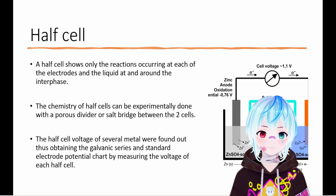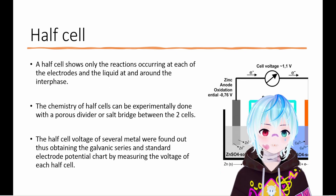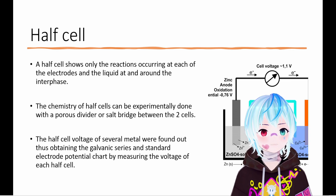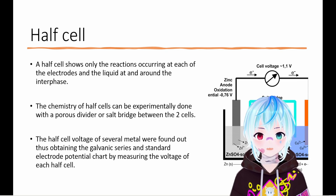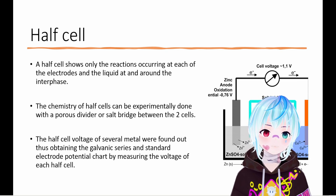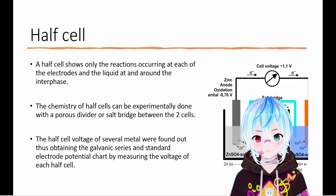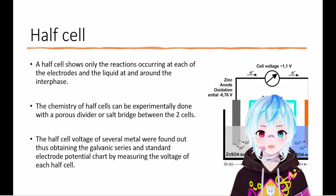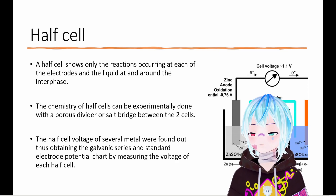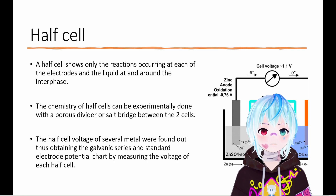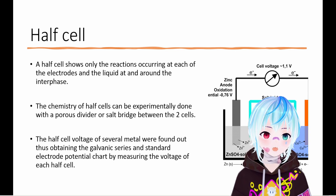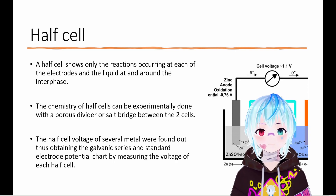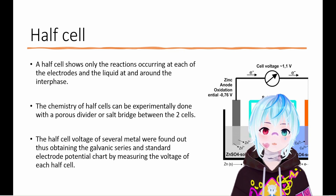A half cell is a galvanic cell which contains two electrodes and a membrane or salt bridge separating the two compartments. The solution where the anode is located is called the anolyte, and the solution where the cathode is located is called the catholyte. The salt bridge allows for a slow and steady diffusion of ions through the two containers, while a membrane allows for selective diffusion of ions — either both or only one type of ion — through the two chambers.